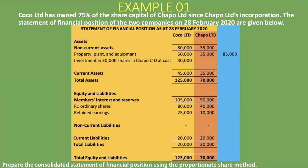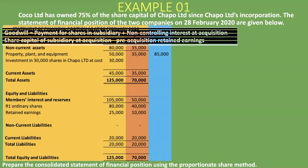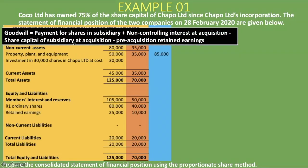The investment in shares of the subsidiary appearing in the parent company's statement of financial position will not appear in the consolidated statement of financial position, but it will affect our calculation for goodwill. When dealing with non-controlling interest, the formula for goodwill is: payment for shares in the subsidiary plus non-controlling interest at acquisition, minus the share capital of the subsidiary at acquisition, minus the pre-acquisition retained earnings. You can see a difference between how we do it with non-controlling interest versus a wholly owned subsidiary.